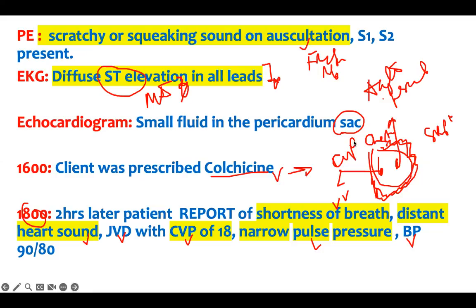Those are all signs and symptoms of cardiac tamponade. You develop a narrow pulse pressure because your systolic goes down while your diastolic goes up — they get closer together, for example 80 systolic nearing 90 diastolic. The elevated CVP is consistent with venous congestion. Because the heart cannot pump — it's being squeezed — you also have distant heart sounds.